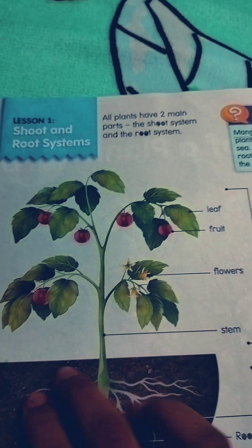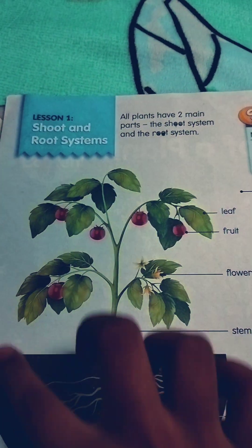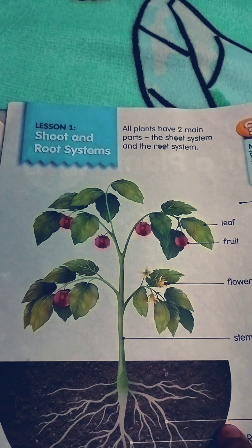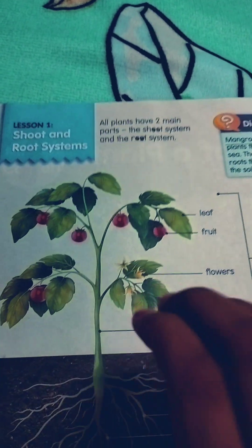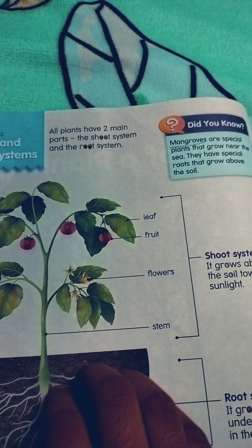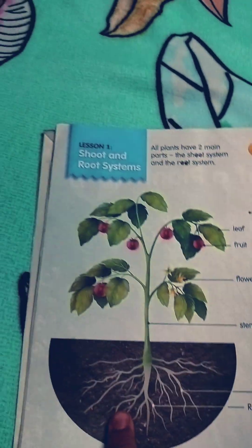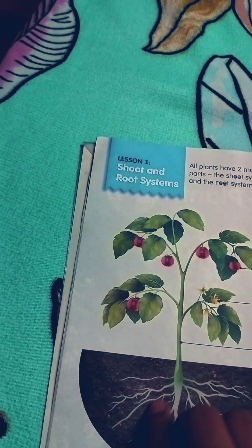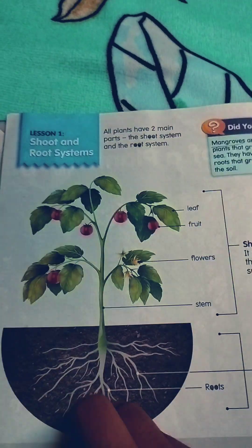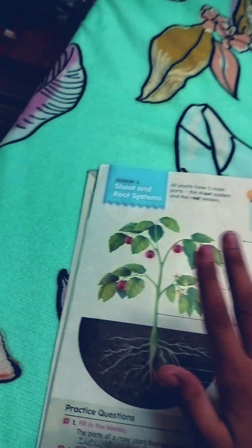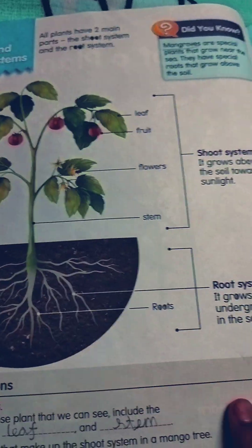The shoot system is the upper side — the upper face of the plant, where sunlight and water reach. But the root system is inside, underground, where the roots are. Nutrients go from there up to the plant. Understood?